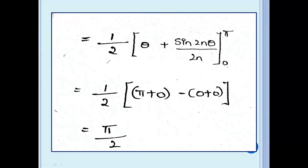Integrating: 1 by 2 times [θ plus sin(2nθ) by 2n], evaluated from 0 to π. Applying limits: 1 by 2 into (π plus 0 minus 0 minus 0). The answer is pi by 2.